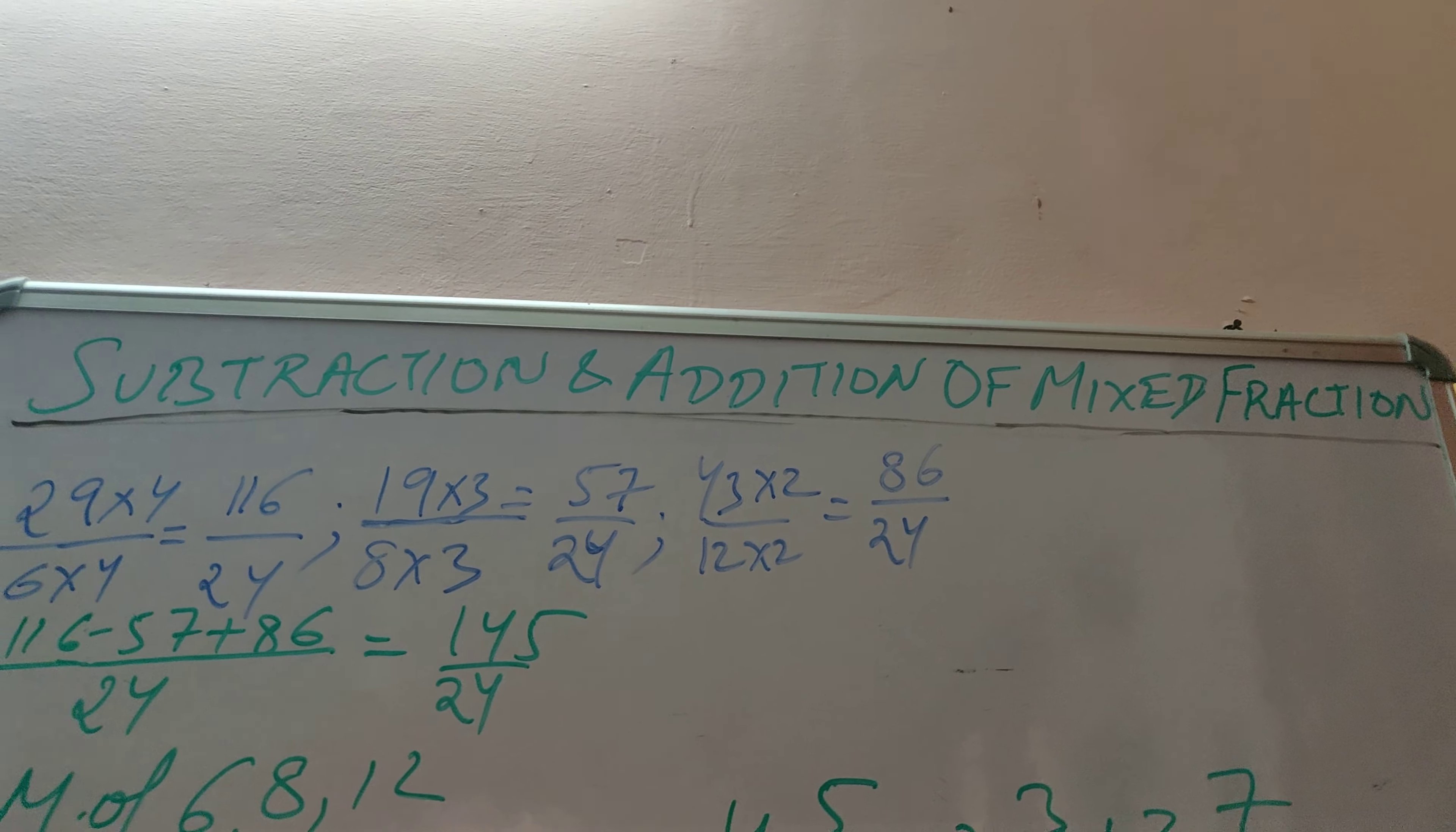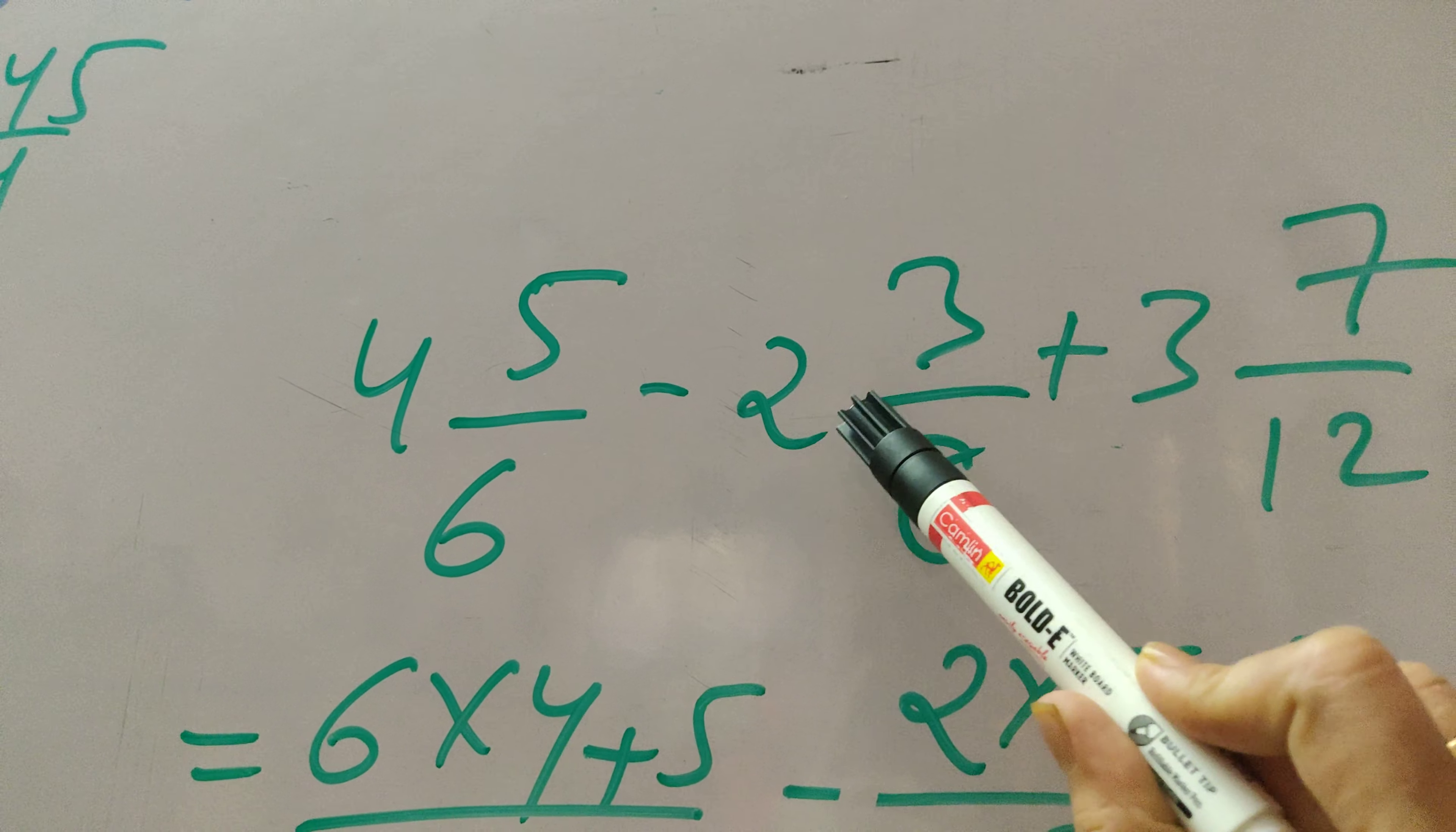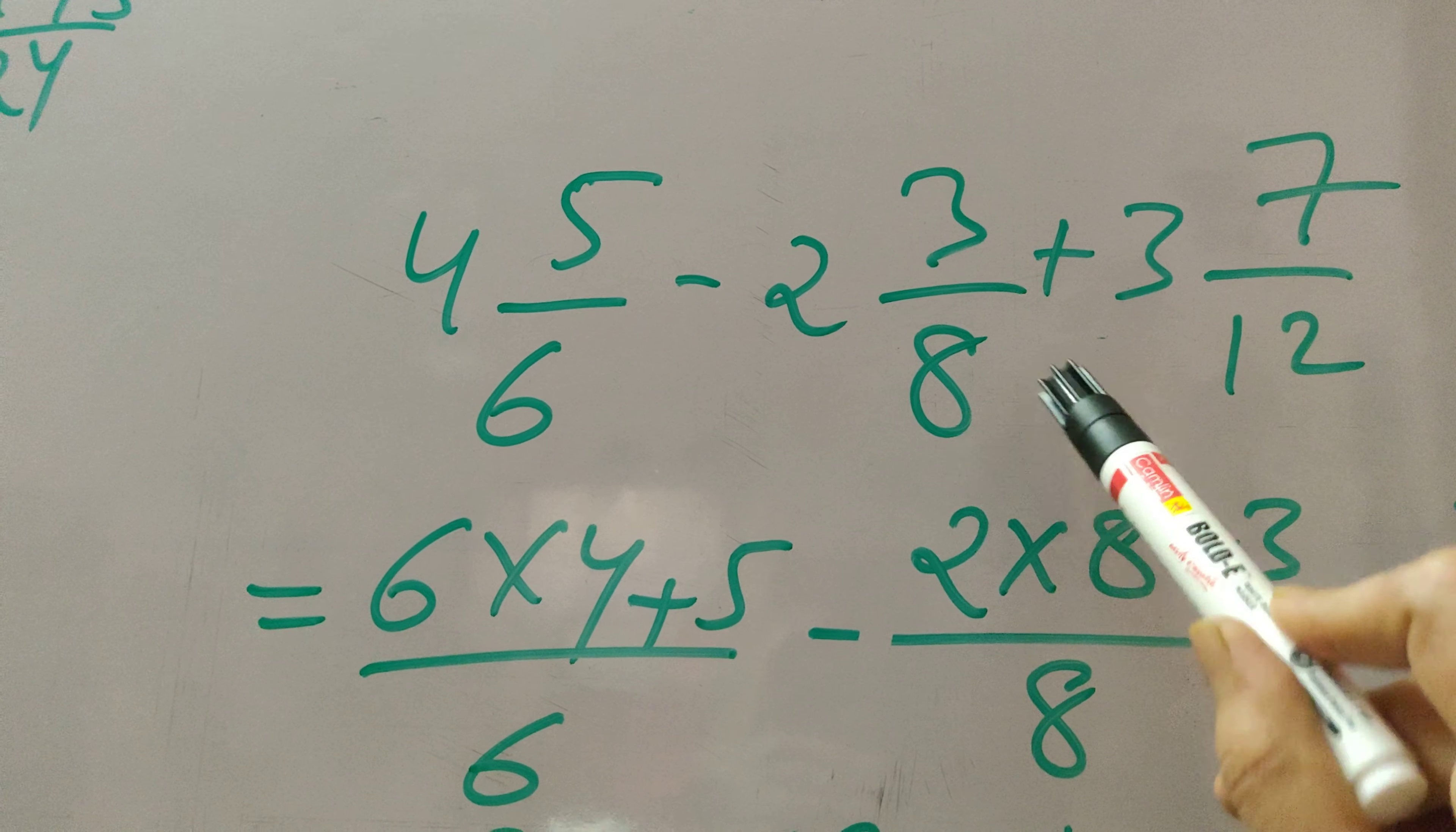Now students, let's understand subtraction and addition of mixed fractions. So we have a mixed fraction here: 4 5/6 minus 2 3/8 plus 3 7/12. So we have to subtract and there is some addition part also.